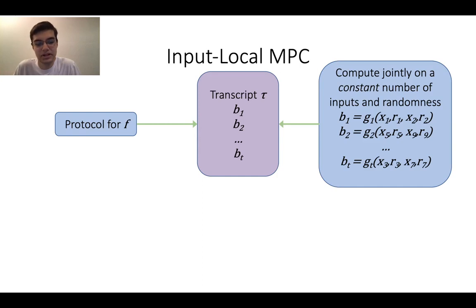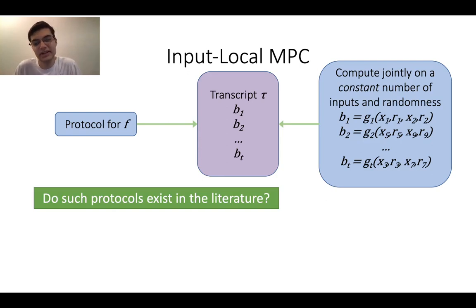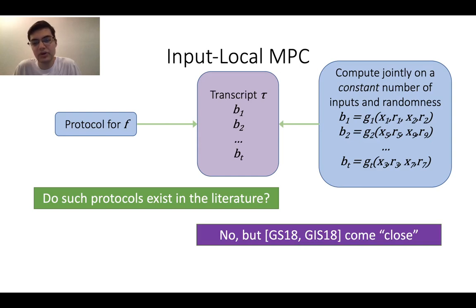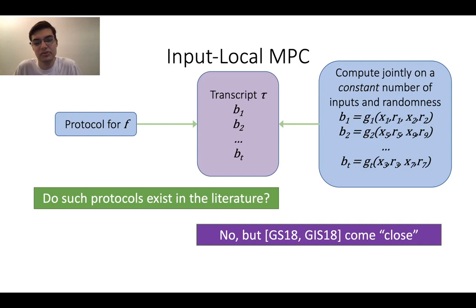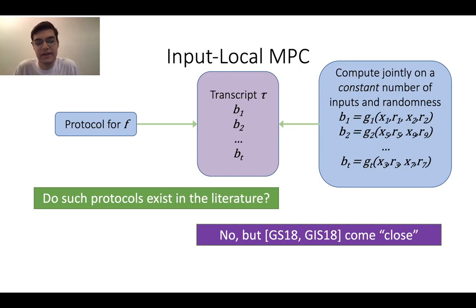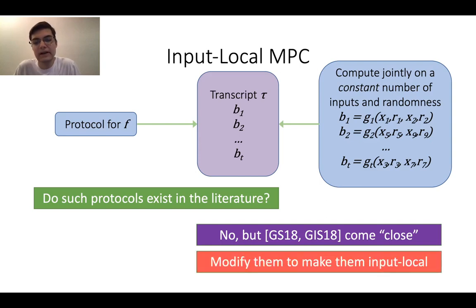Do input local MPC protocols exist in the literature? Unfortunately, the answer is no. However, certain protocols — namely GS18 and GIS18 — come close. These protocols take an arbitrary MPC protocol with specific structure (called conforming protocols) and compress them into two rounds by having each party send garbled circuits for each round of the original protocol. In a sense this feels input local because the garbled circuits themselves don't depend on other parties. However, there are technical hurdles — for example, the garbled circuits have hard-coded values that depend on all parties. In this work, we are able to modify these protocols to make them input local, thus constructing an input local MPC protocol.